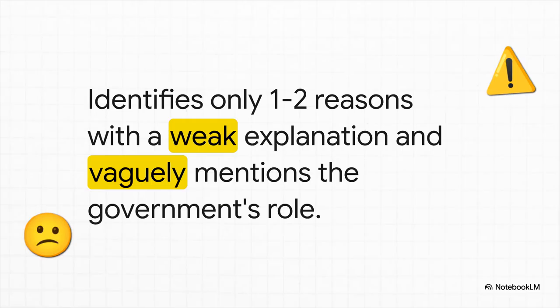An average answer usually just scratches the surface. It might only identify one or two reasons for market failure, and the explanation is probably a bit weak. But the biggest giveaway is a vague mention of the government's role — something like 'the government can intervene,' without saying how or making that crucial link. That's the trap to avoid.